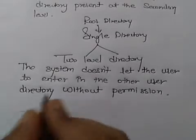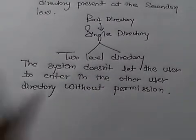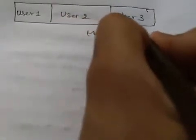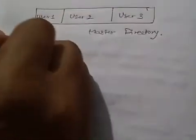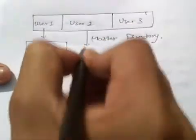Now, let us look towards the diagrammatic or pictorial representation of the directory structure. Suppose we have a master directory. In this, we have three users: User1, user2, user3. So, this is our master directory.